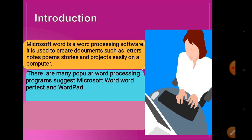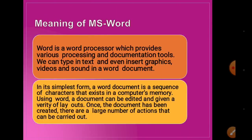There are many popular word processing programs such as Microsoft Word, WordPerfect, and WordPad. In its simplest form, a word document is a sequence of characters that exist in a computer's memory. Using Word, a document can be edited and given a variety of layouts. Once the document has been created, there are a large number of actions that can be carried out, and in this chapter we are going to read about all those actions.